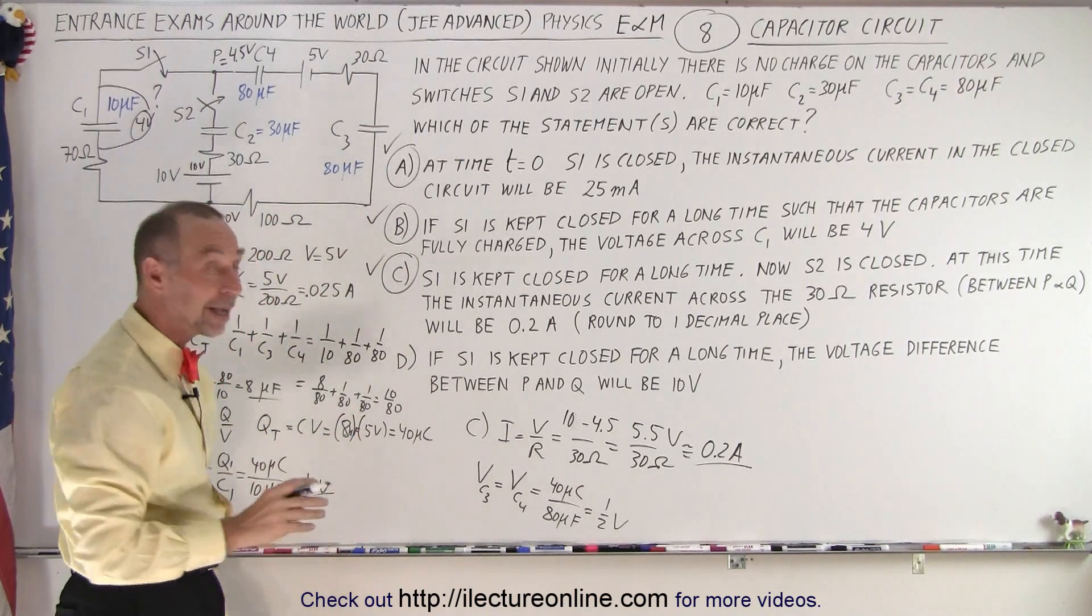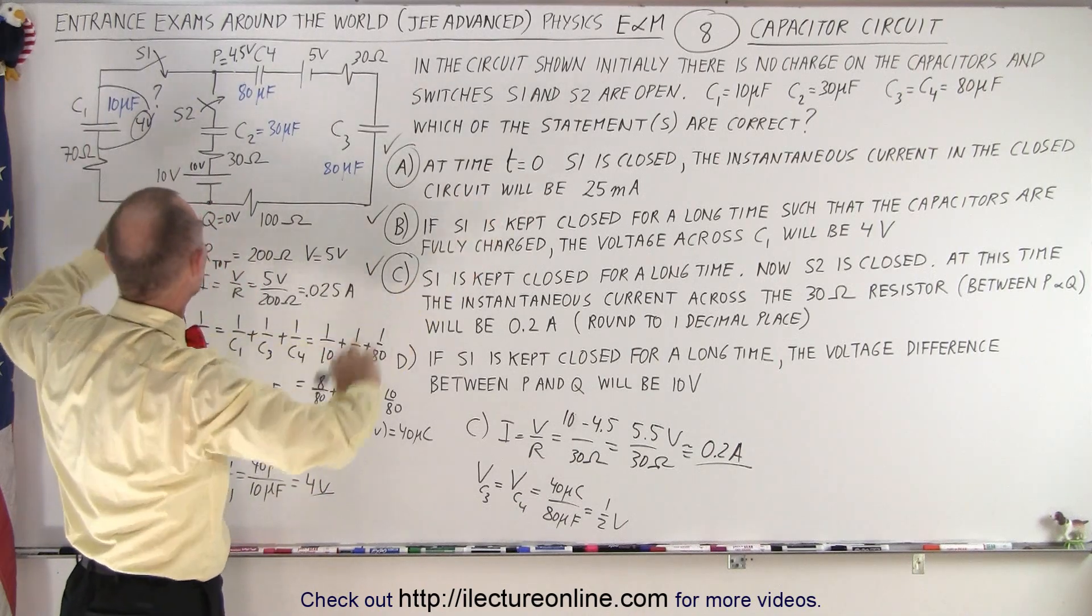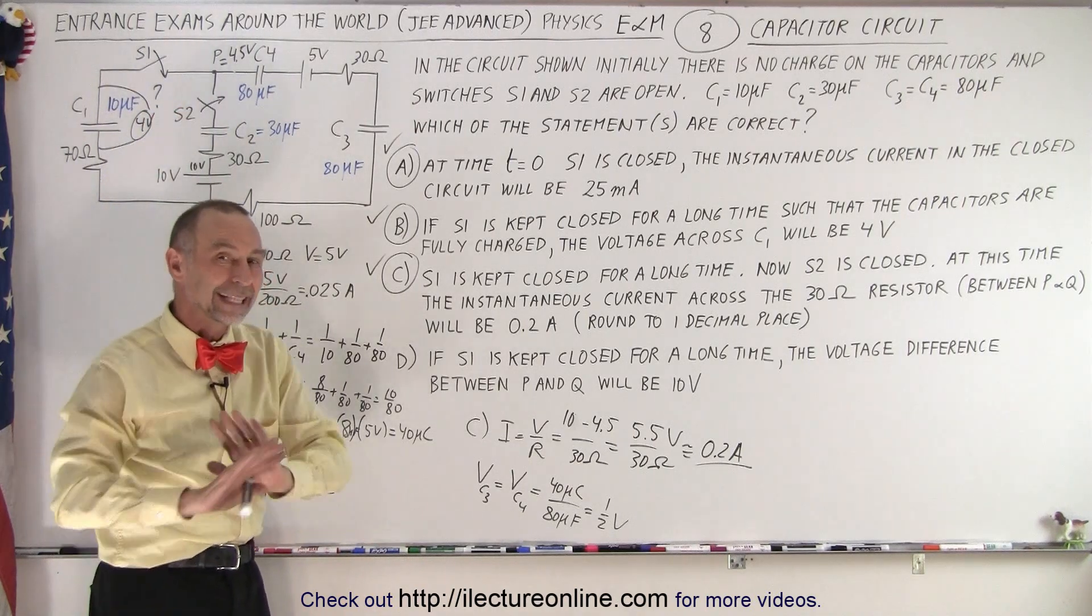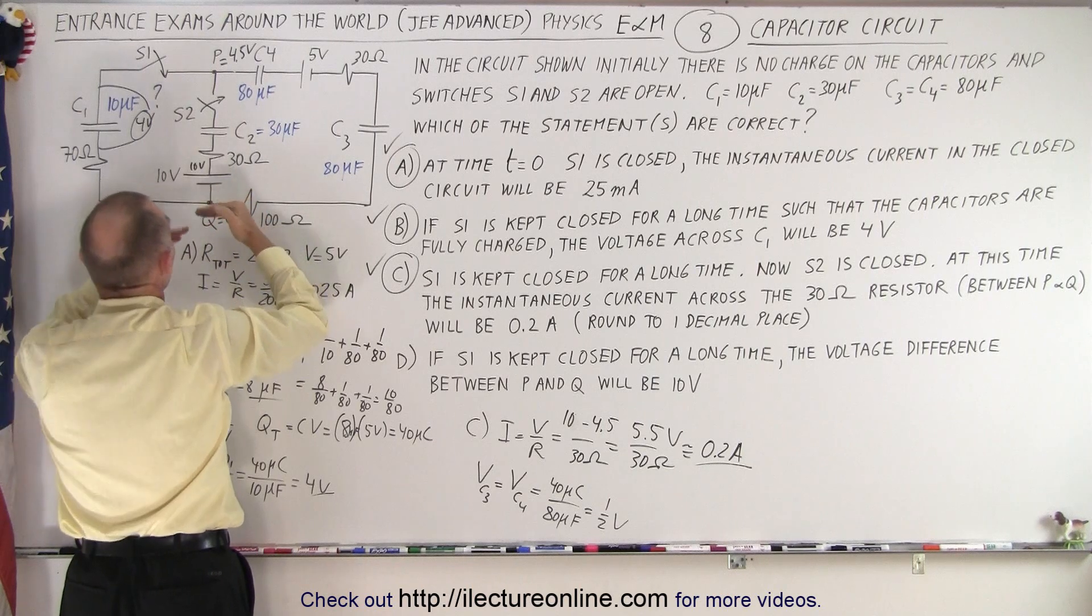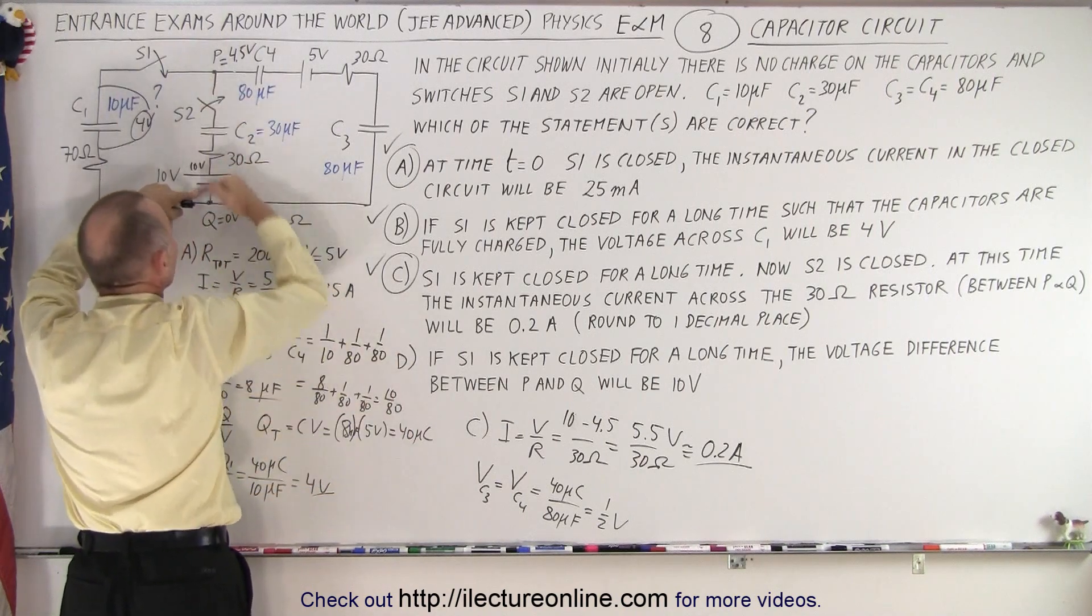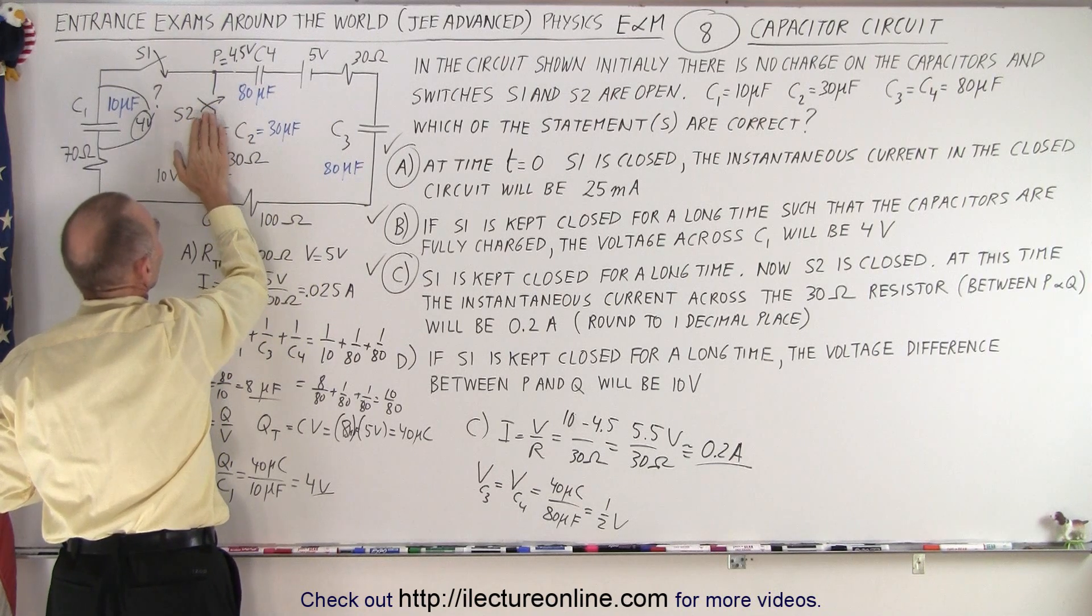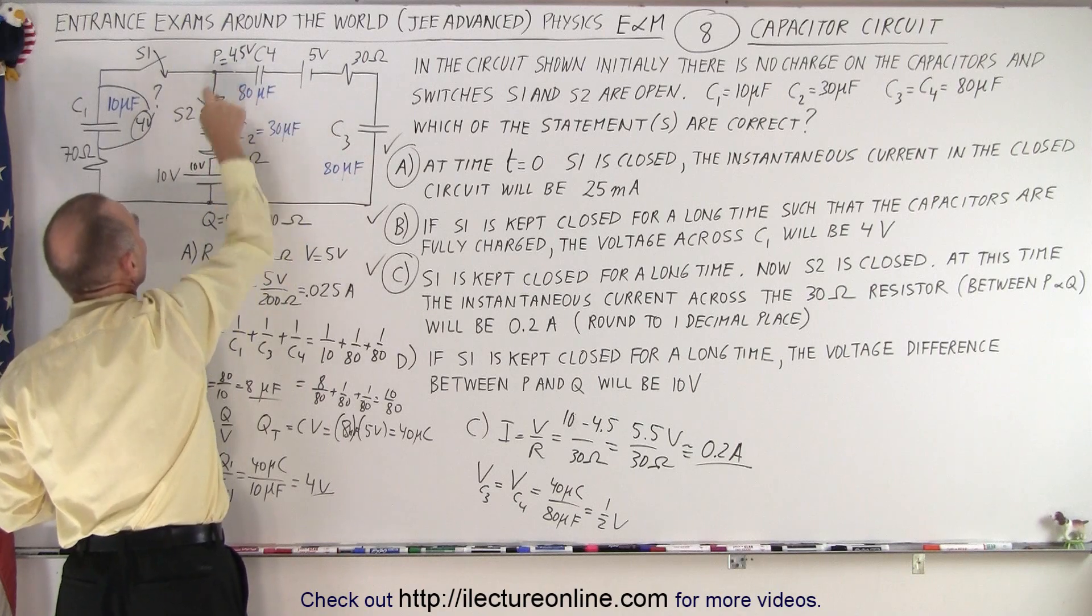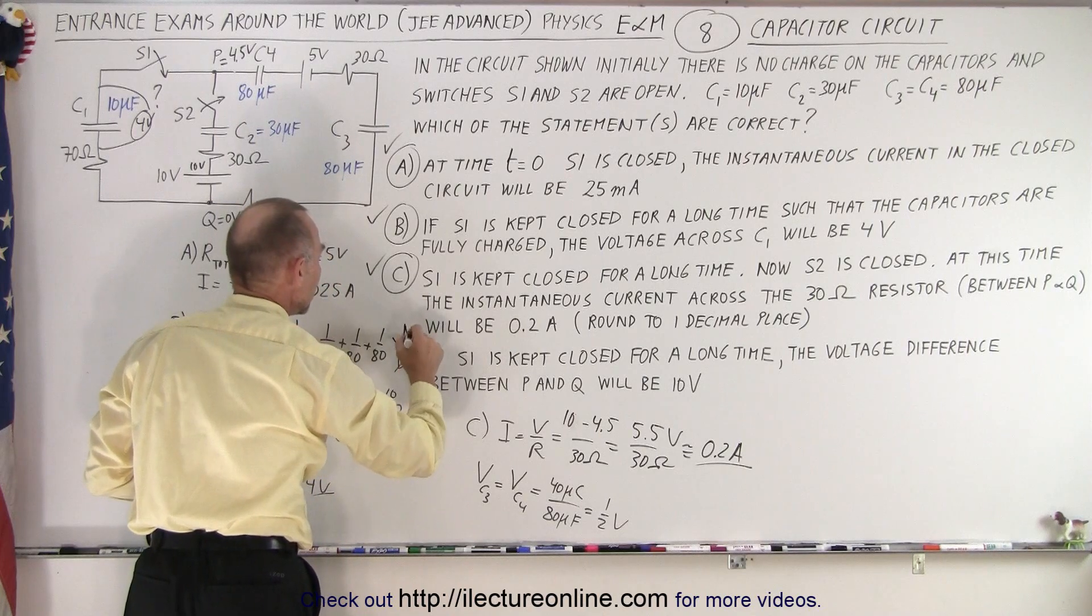So far A, B, and C are all correct. How about D? If S1 is kept closed for a long time, the voltage difference between P and Q will be 10 volts. Now that cannot be the case, because only the 5 volt battery has any significance in the outside loop, and the 10 volt has nothing. The 10 volt cannot be applied because switch S2 is still open for D. The 10 volt has no application to the circuit. This is not even there because the switch is open. There's only a 5 volt driving the current around the circuit, so the maximum difference between P and Q is 5 volts. 10 volts cannot be possible. So we say no, D is not a possibility.